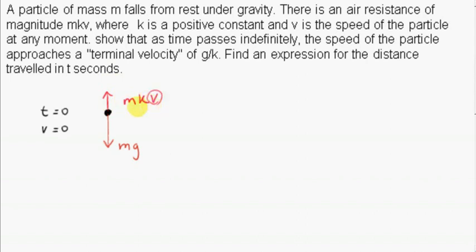The magnitude of the resistance force depends on the speed. Initially, when the particle is dropped from rest, v is zero, so the magnitude is zero — m times k times zero. So at t equals zero, we have no resistance force at just this instant. As the particle falls, its speed will increase, even with air resistance.